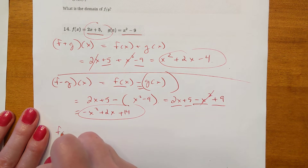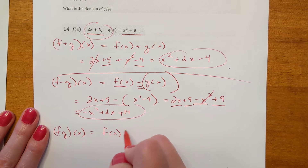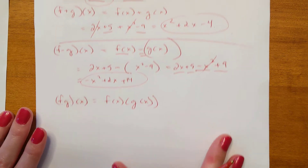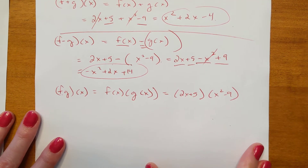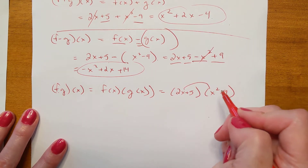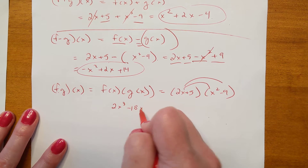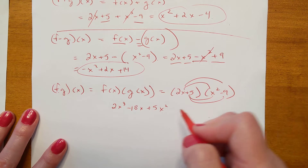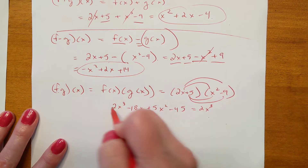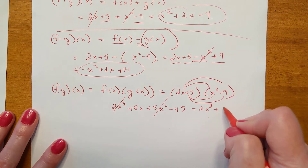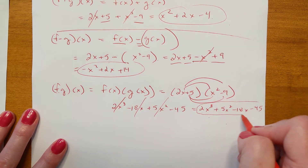Then f·g of x — when they're written together like that, it means f times g. You can separate into f(x) times g(x). f(x) was 2x plus 5, g(x) was x squared minus 9. We foil those together using first, outer, inner, last. That gives 2x cubed, minus 18x, plus 5x squared, and minus 45. Writing in standard order from highest to lowest power: 2x cubed plus 5x squared minus 18x minus 45.